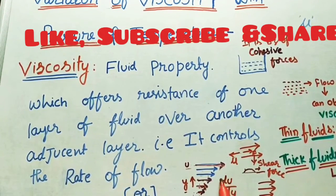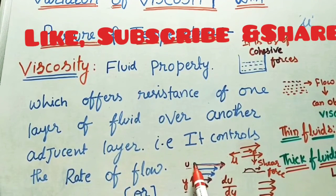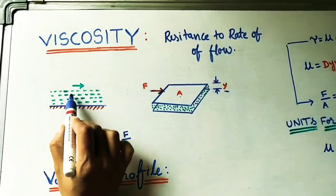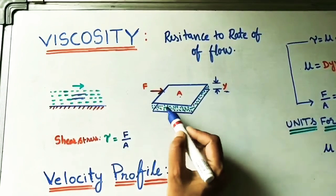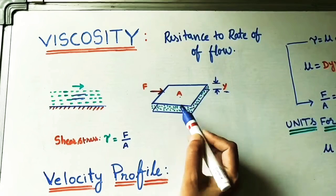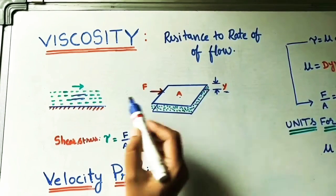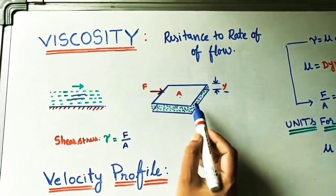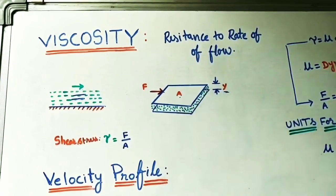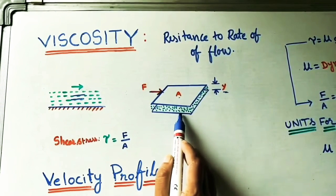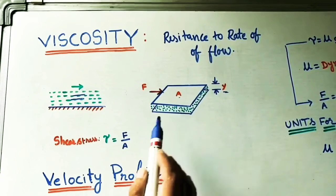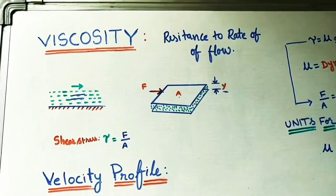Velocity is changing with respect to distance. If we take two layers of water in 3D form, with a distance y between them, we can ask: what is the shear stress developed between those two surfaces or two layers? Shear stress will develop between adjacent layers.